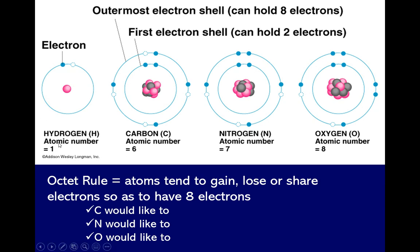Hydrogen has an atomic number of one, so it requires one more electron to become stable. Carbon has an atomic number of six — two electrons are in the first shell, and the remaining four electrons are located on the outermost shell. So carbon requires four electrons to become stable.